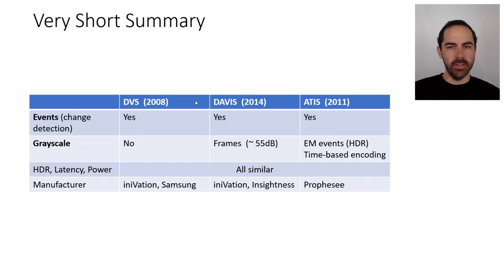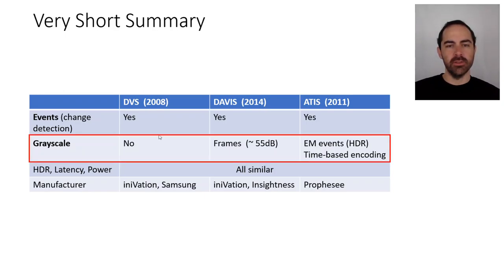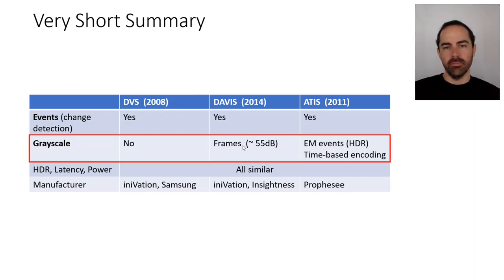In a nutshell, the DVS, the DAVIS, and the ATIS all three have change detection events — events that have x, y, t, and polarity. The difference is really in the grayscale: the DVS has no direct grayscale readout; the ATIS has the exposure measurement events; and the DAVIS has grayscale in the form of frames. The change detection events are HDR, and the latency and power consumption of these three sensors are all very similar.